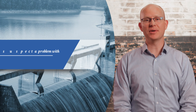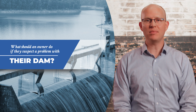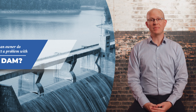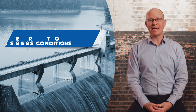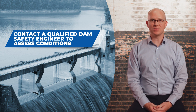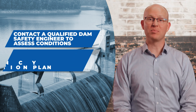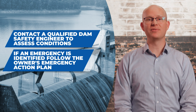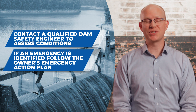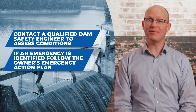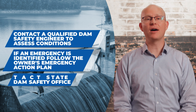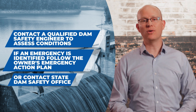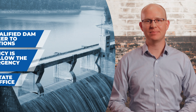What should an owner do if they suspect a problem with their dam? If a dam owner thinks there's a potential problem, they should engage qualified engineering professionals to assess conditions. If an emergent dam safety issue is identified, the owner should follow their emergency action plan. If they don't have an emergency action plan, they should contact the State Dam Safety Office and a local emergency response agency.